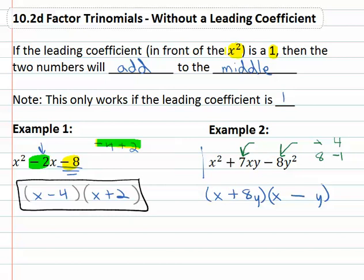Positive eight and minus one y. We don't have to write the one and we're factored to x plus 8y times x minus y.